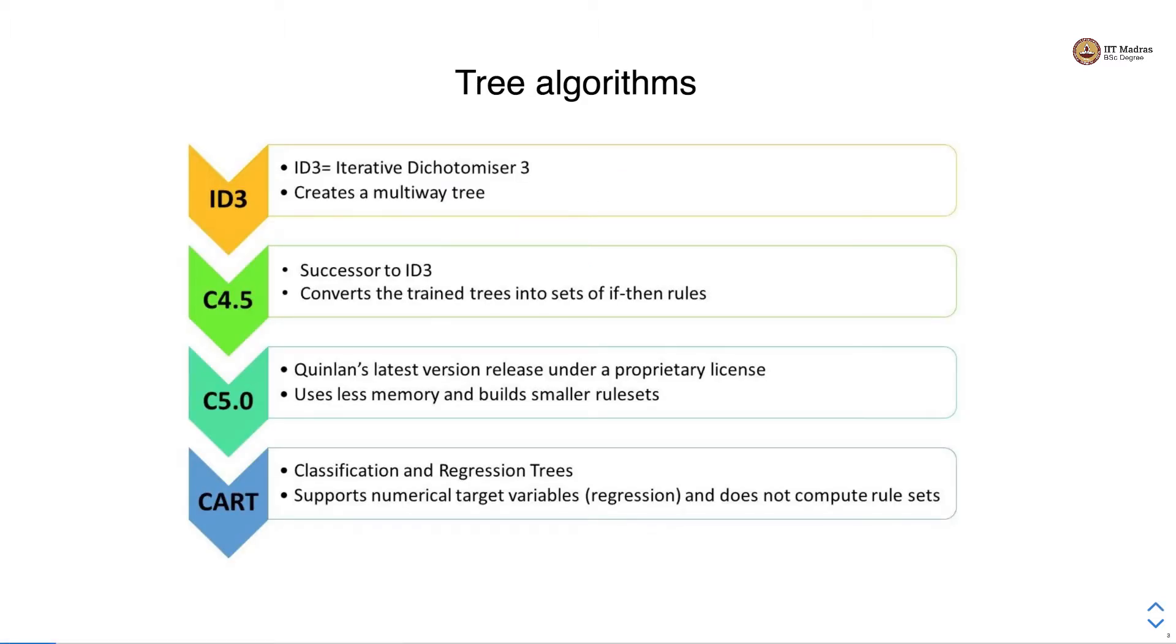There are several tree algorithms. ID3 is the basic tree algorithm. It stands for iterative dichotomizer and it can create multi-way trees. It is succeeded by C4.5 that converts the trained trees into set of if-then rules.